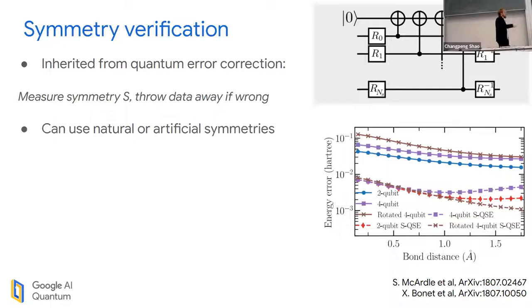This doesn't scale because I don't have any recourse except throwing everything away. The chance of passing every single check decreases exponentially. But for small scale experiments, it works. Here's our attempt at doing this in theory simulations. You can use natural or artificial symmetries. The nicest symmetry to use is the number operator or spin symmetry.